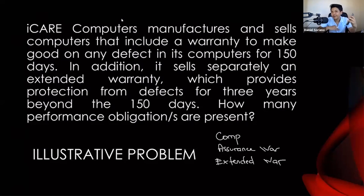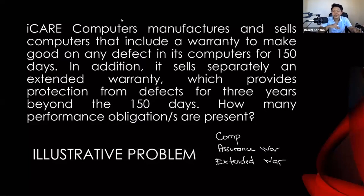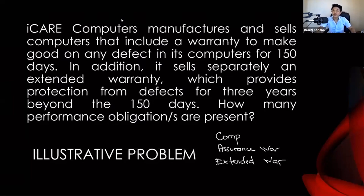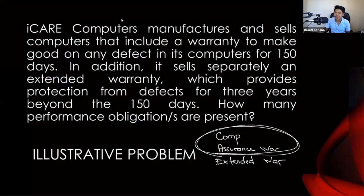We need to determine whether these performance obligations are distinct or not, because if they are not distinct, we combine them as one. Let's say you buy a phone — normally this comes with an assurance warranty, to give the buyer peace of mind. Can the seller sell the product without giving away an assurance warranty? Of course not — you cannot sell a product unless you give away an assurance warranty. So the product and the assurance warranty are not distinct.